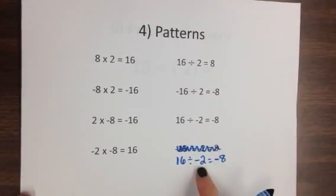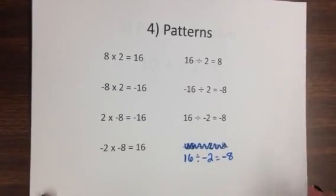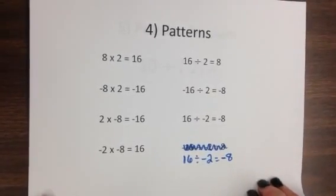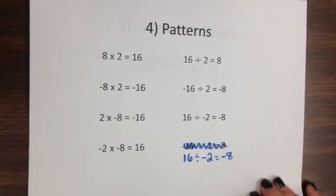Okay, so positive divided by negative will be negative because this means that this negative times this negative would give you that positive. Okay, those are your patterns. Write down your observations. What do you notice here? What do you think the rules might be?